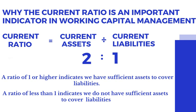The goal should be to have twice as many assets as liabilities. A ratio of two to one is challenging for many businesses. The higher the current ratio, the more stable the company is, giving a better understanding of working capital requirements. The current ratio helps gauge the liquidity position of the business — the company's ability to convert its current assets into cash to pay off short-term liabilities.